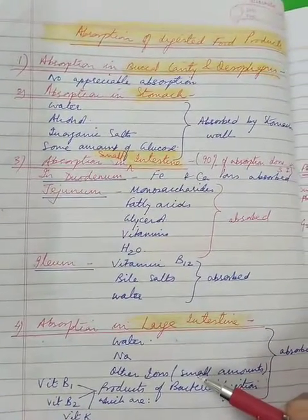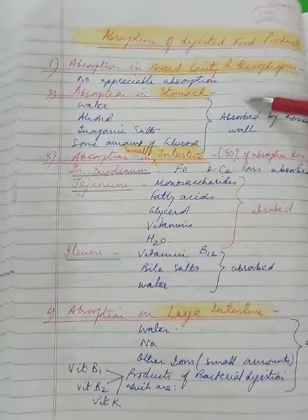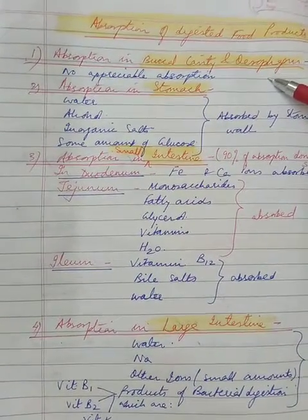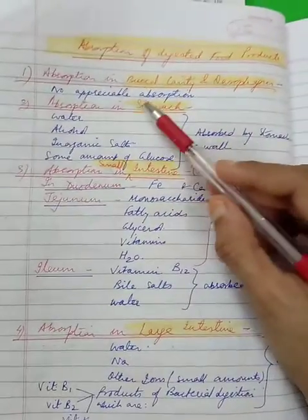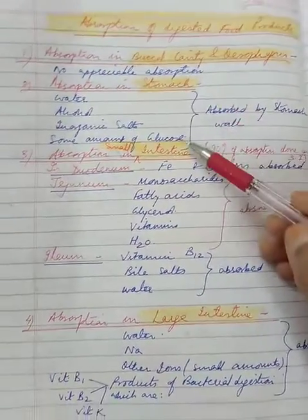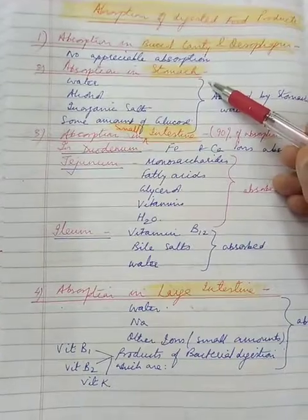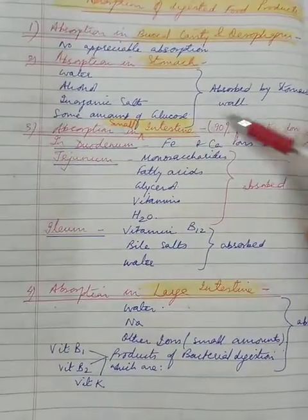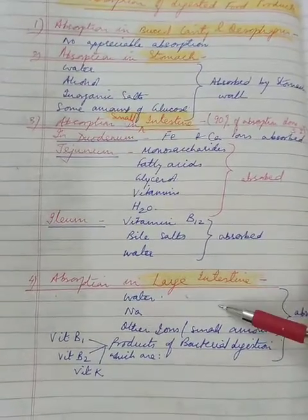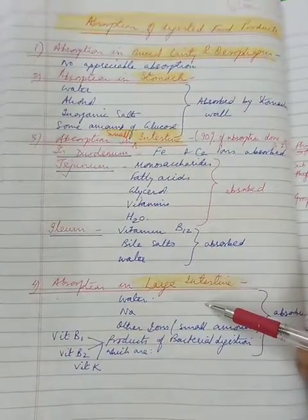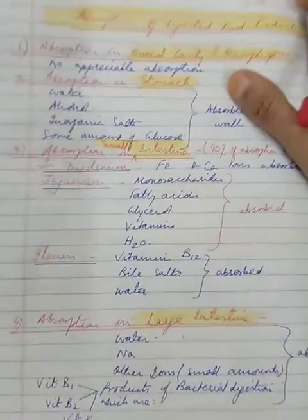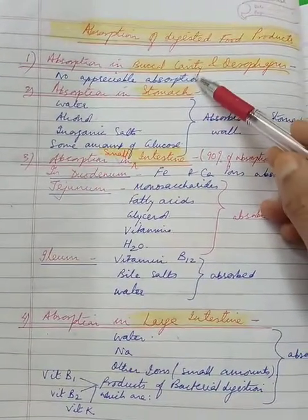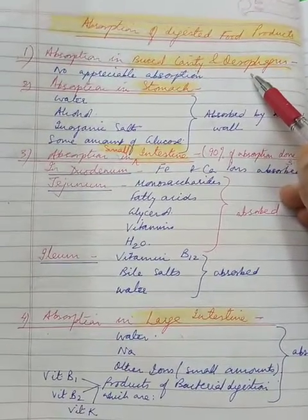Absorption when we talk in the alimentary canal, we can discuss under four headings. Number one, buccal cavity and esophagus where no appreciable absorption takes place. As I said, no appreciable absorption in mouth cavity or the buccal cavity and esophagus.